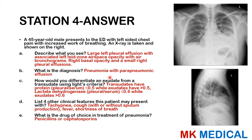Light's criteria helps us distinguish a transudate from an exudate. We consider it a transudate if the pleural-to-serum protein ratio is less than 0.5; if greater than 0.5, it is an exudate. For lactate dehydrogenase, a pleural-to-serum LDH ratio less than 0.6 is a transudate; greater than 0.6 is an exudate. Transudates result from reduced oncotic pressure — nephrotic syndrome, liver cirrhosis. Exudates result from inflammatory diseases and cancers — parapneumonic effusions, TB, and malignancies of the pleura.